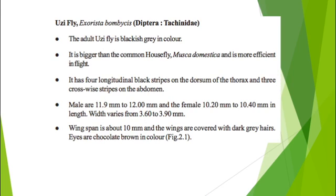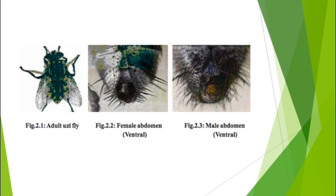Uzi fly — the scientific name is Exorista bombycis. It belongs to order Diptera. The adult Uzi fly is brackish gray in color and males are larger than females. They show sexual dimorphism.